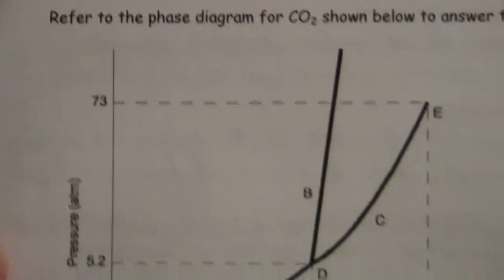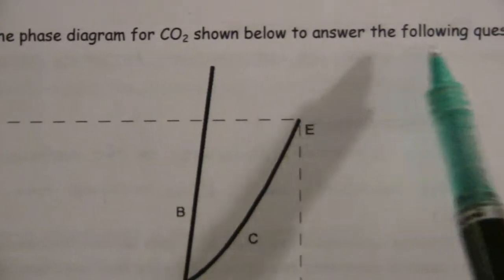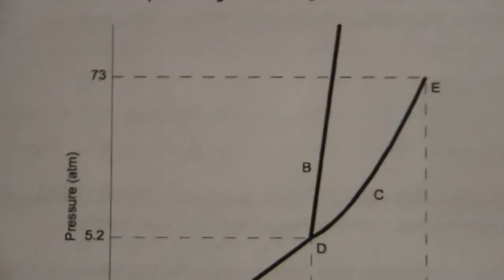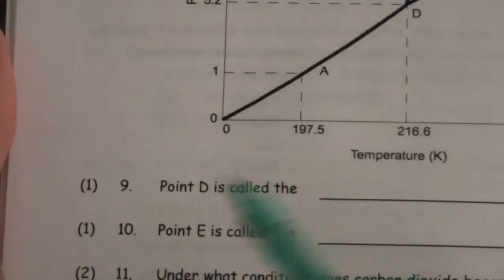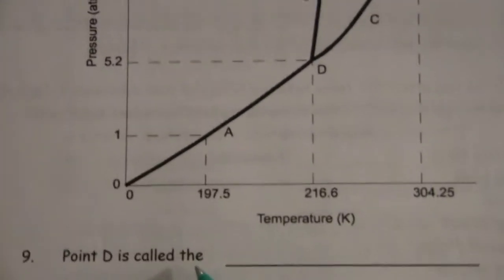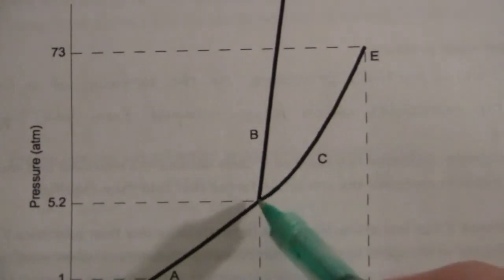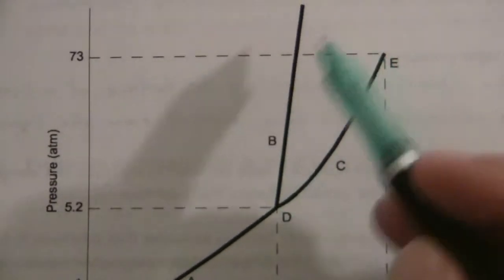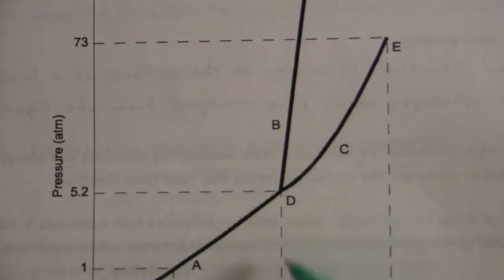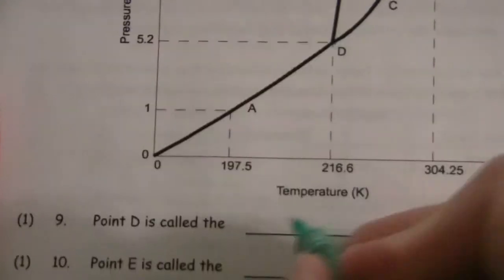Now we have a phase diagram here for carbon dioxide that we'll use to answer the next few questions. It says point D is called the... So here's point D. That's the point where we have the solid and the liquid phase coming together as well as the vapor phase. That's why we call that the triple point.